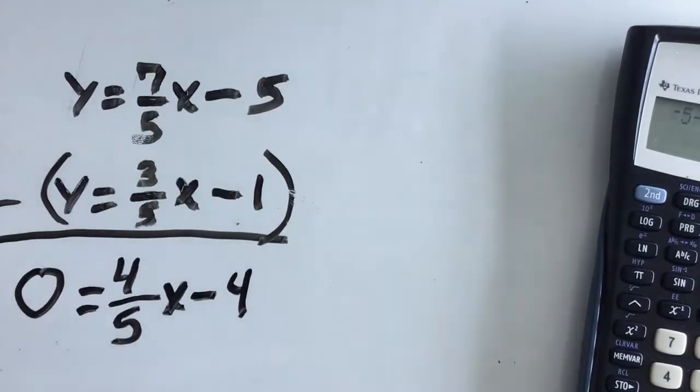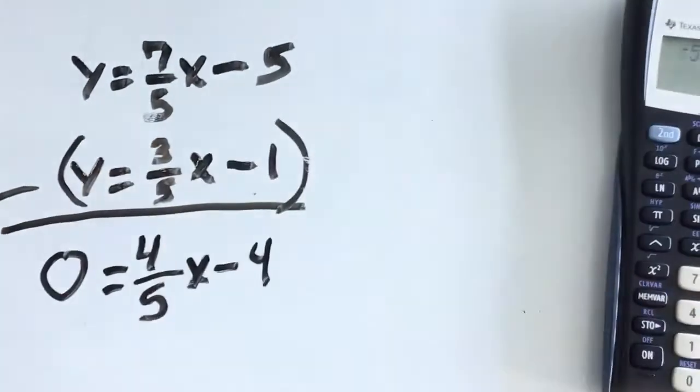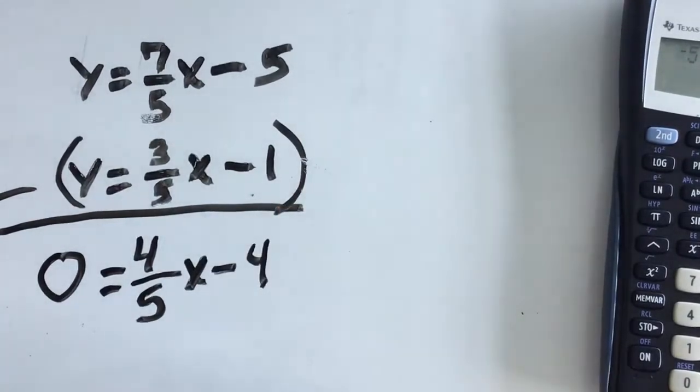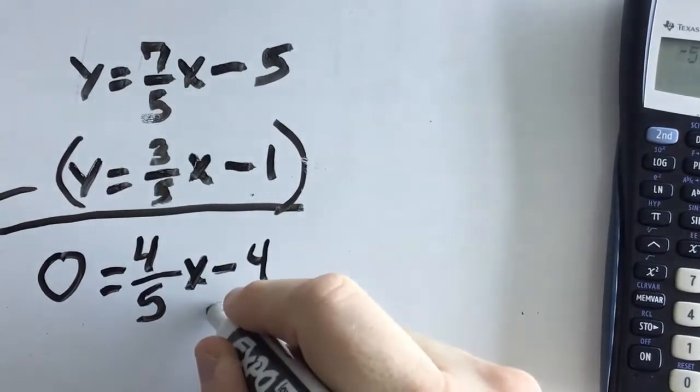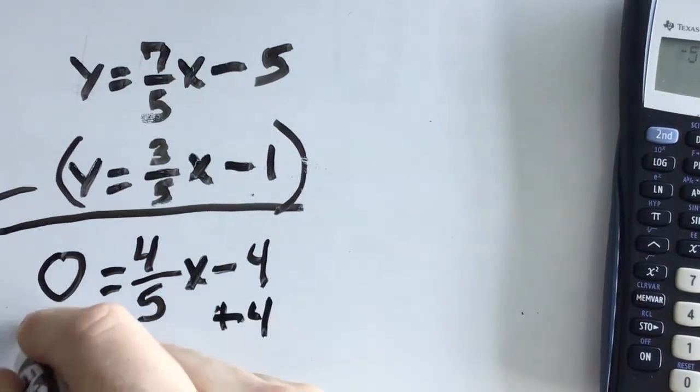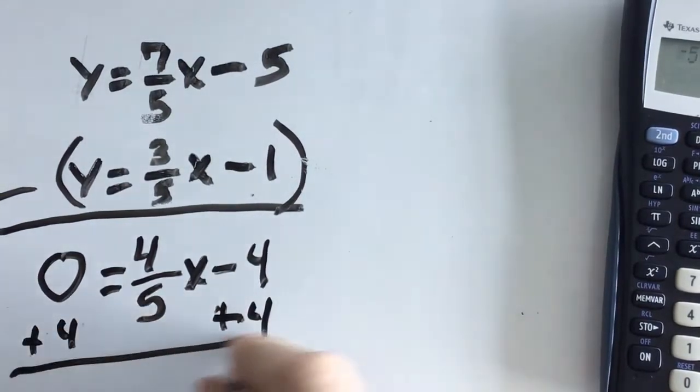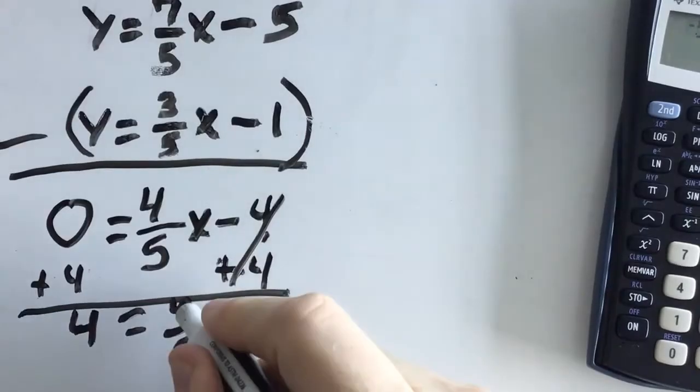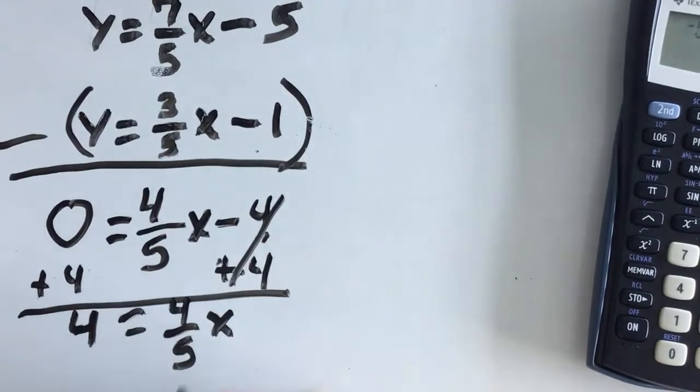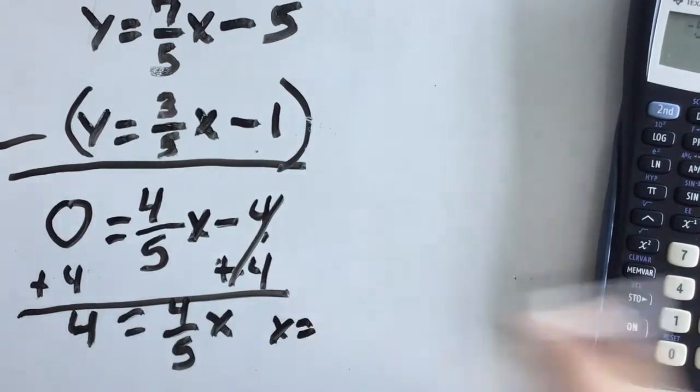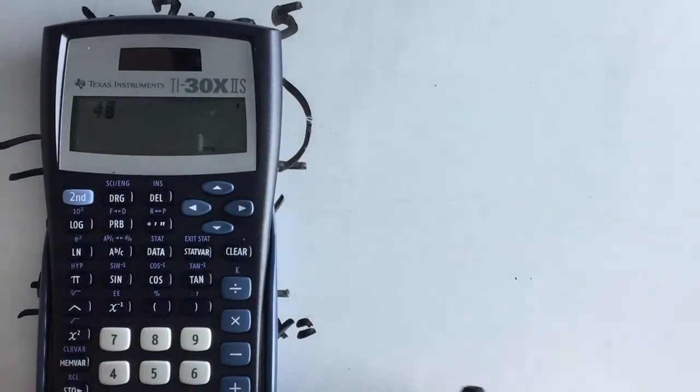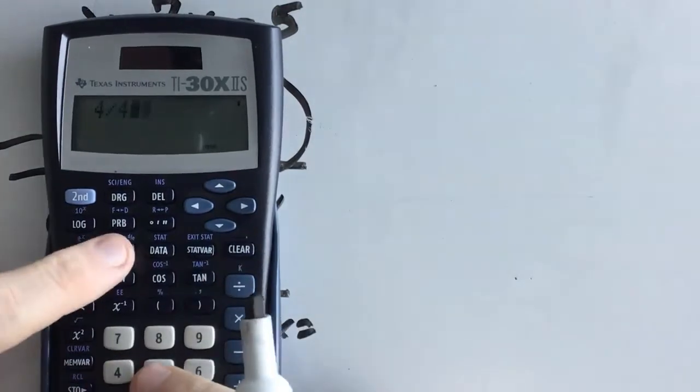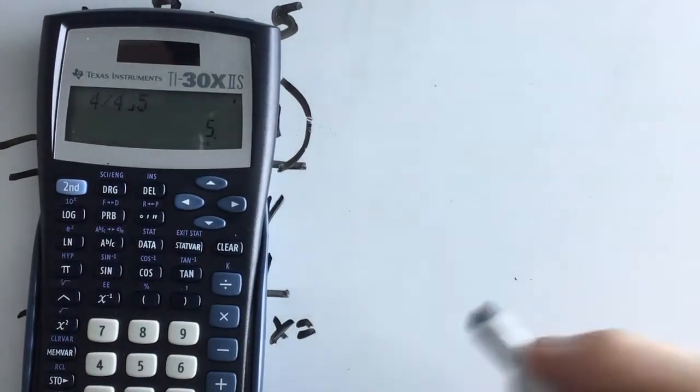And as we know, to solve an algebraic equation, we're just going to reverse all of our orders of operations. So, we're going to start here by adding four on both sides. Should not need a calculator for this part. Four equals four over five X. And now to find the X, I'm going to take four and divide it by four-fifths. So, X will equal, now we get our calculator, four divided by four over five. And that makes the answer five.